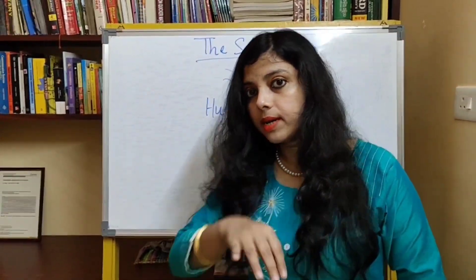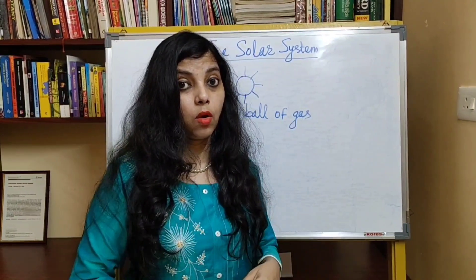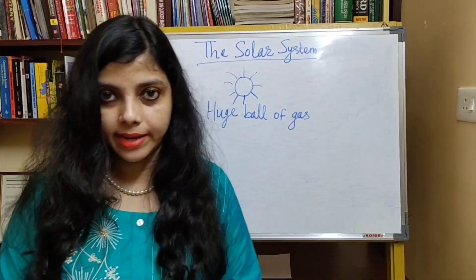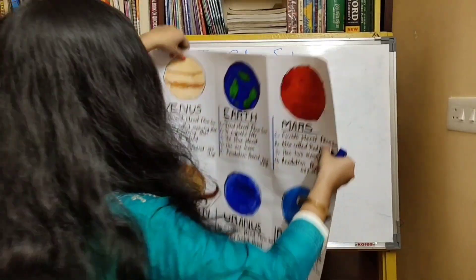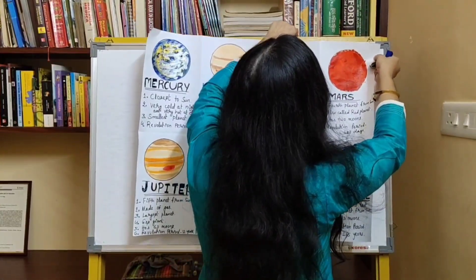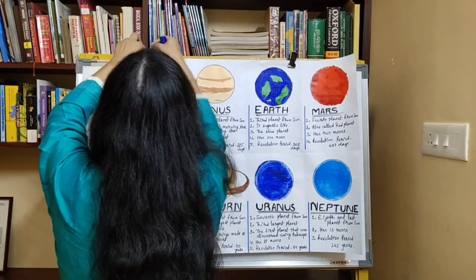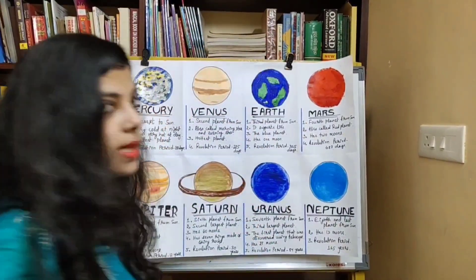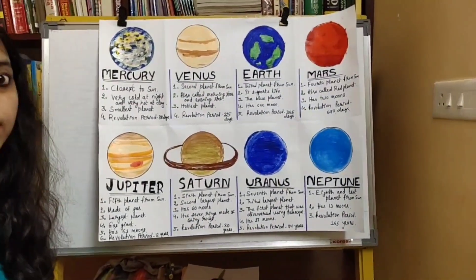After that, what comes in the solar system? It has its own eight planets orbiting around it. Do you want to see the planets? Let me show you all the planets. Can you see them? Yes! So let's start with the planets now.